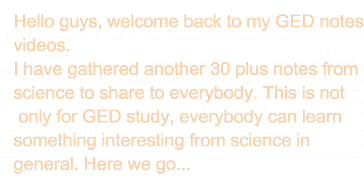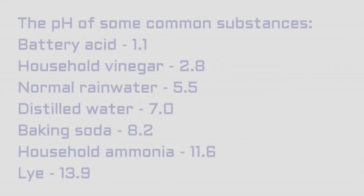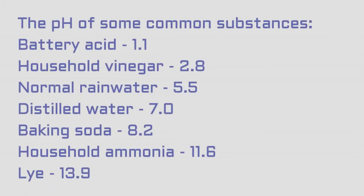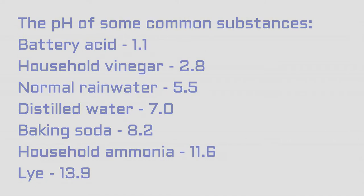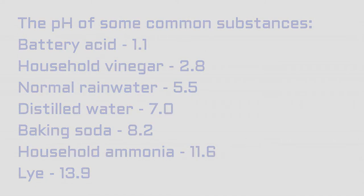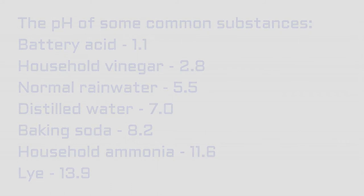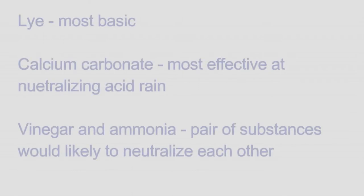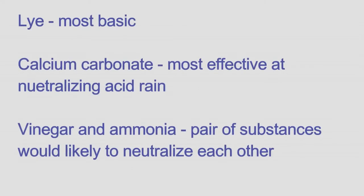The pH of some common substances: battery acid 1.1, household vinegar 2.8, normal rainwater 5.5, distilled water 7.0, baking soda 8.2, household ammonia 11.6, lye 13.9. Lye is the most basic. Calcium carbonate is the most effective at neutralizing acid rain.